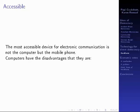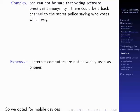We advocate using mobile phones because they're the most accessible and common device. Computers have the disadvantage that because of their complexity you don't know what the voting software is actually doing. There could be back channels in it that change your vote or reveal to someone else the way you voted. They're also expensive. Internet computers are not as widely available as mobile phones. There may only be one in a house, so people may not be confident that the way they vote is hidden from others in the house. So we opted to use mobile devices.